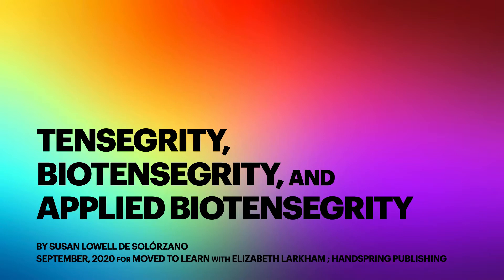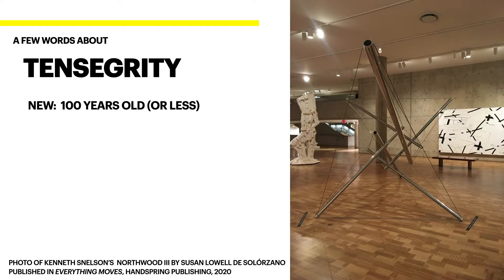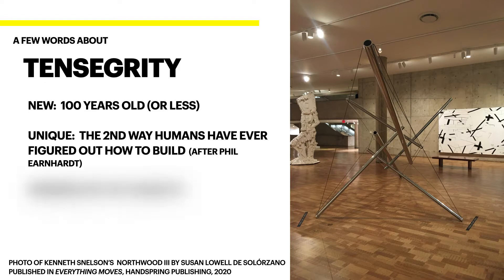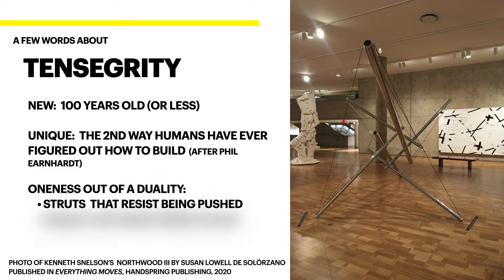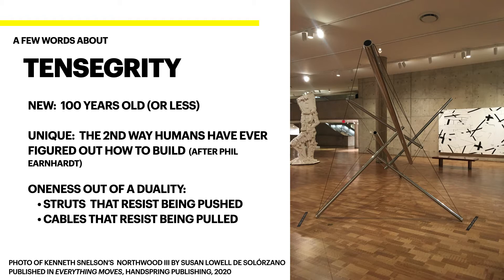Tensegrity, biotensegrity, and applied biotensegrity. Tensegrity structures are pretty new and they're really unique. Phil Earnhardt says this is only the second way that humans have ever figured out how to build, and this is after hundreds of thousands of years of human culture. These structures have a oneness that somehow emerges from this duality of struts that resist being pushed, and cables that resist being pulled.